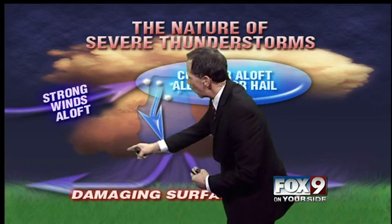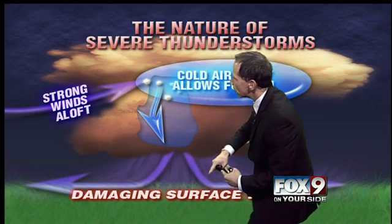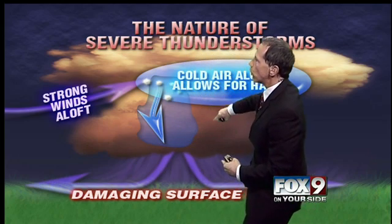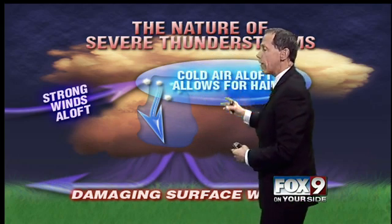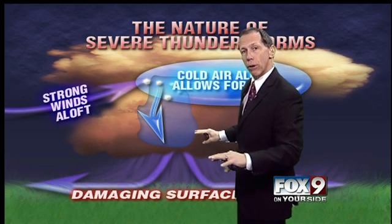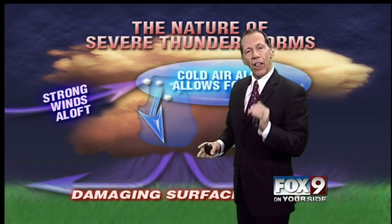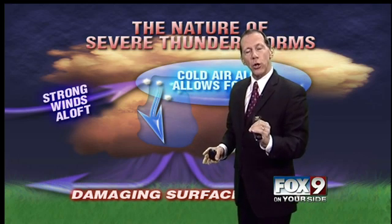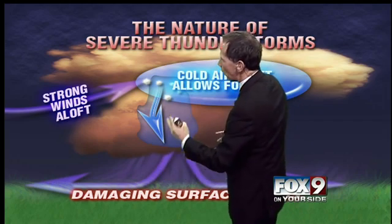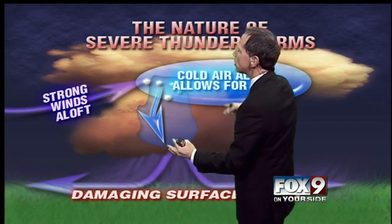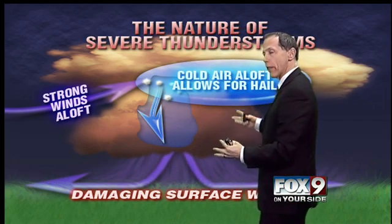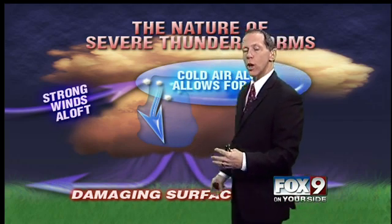If you get a thunderstorm to rotate, what happens is the wind will come in in a circular pattern. It'll rotate in, and the downdraft will be separate from the updraft. That's when a thunderstorm will continue to live, because now you're feeding it all the moisture it needs, and the damaging winds and the tornado that can then ensue will be separate from what is going on with the updraft. So that's why you'll keep these things going.